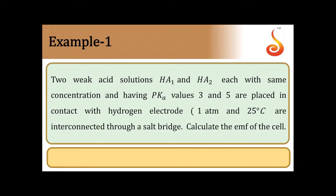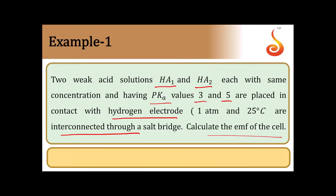Two weak acid solutions HA1 and HA2, each with the same concentration and having pKa values of 3 and 5, are placed in contact with a hydrogen electrode and interconnected through a salt bridge. We need to calculate the EMF of the cell. This comes under an electrolyte concentration cell, since the concentration of electrolyte is different in the two half cells.